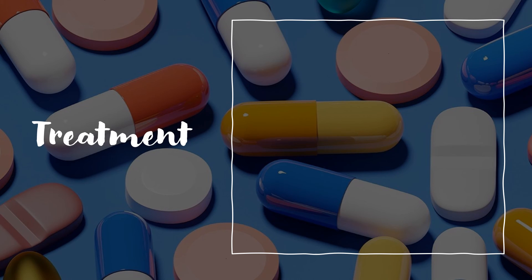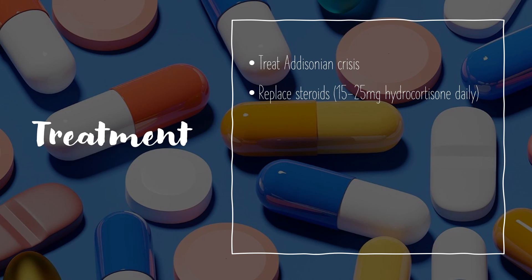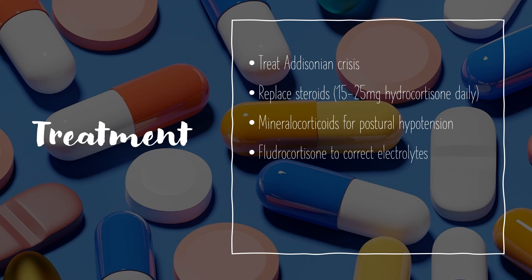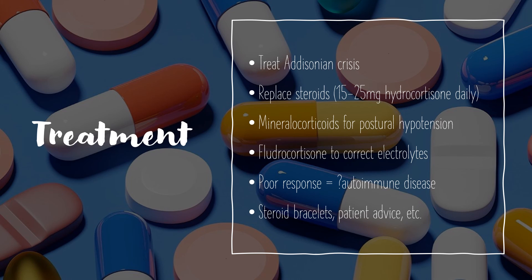When discussing treatment, the first thing you need to do is identify whether they're in an Addisonian crisis, and treat this if it occurs. But otherwise, if it's a less acute problem, the next thing would be to replace the steroids in these patients by giving 15 to 25 milligrams of hydrocortisone daily. Then you can give mineralocorticoids for postural hypotension and fludrocortisone to correct the hyponatraemia and hyperkalaemia. If there is a poor response to all of this treatment, you may need to think along the lines of autoimmune diseases, so you should check the thyroid and do a coeliac serology. If patients are taking steroids, you should always advise wearing a steroid bracelet and give advice on when to increase their usage, such as during strenuous exercise or when in sickness.